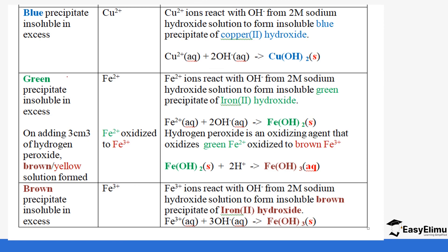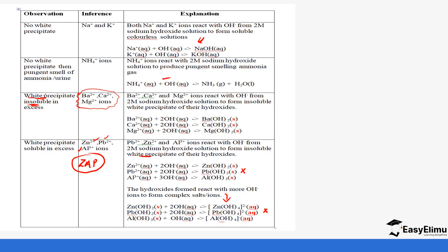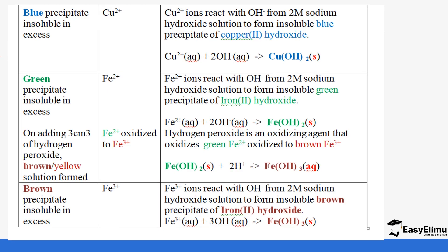Some cations form colored precipitates with sodium hydroxide. Copper ions form a blue precipitate of copper hydroxide that remains insoluble even in excess. Iron(II) ions form a green precipitate of iron(II) hydroxide. Iron(III) ions form a brown precipitate of iron(III) hydroxide. These colored precipitates are all insoluble in excess sodium hydroxide.